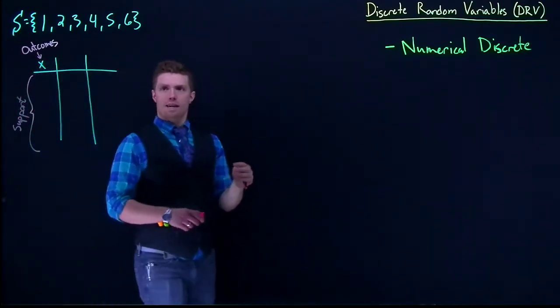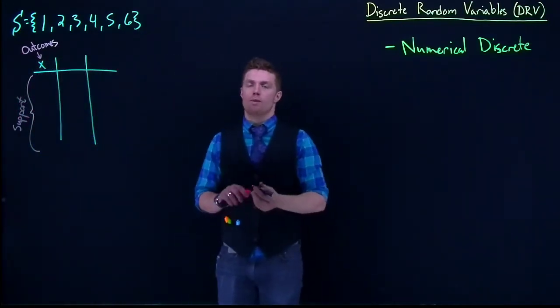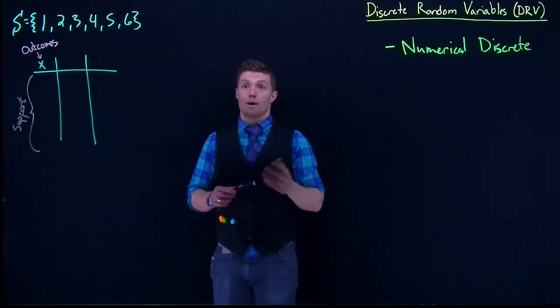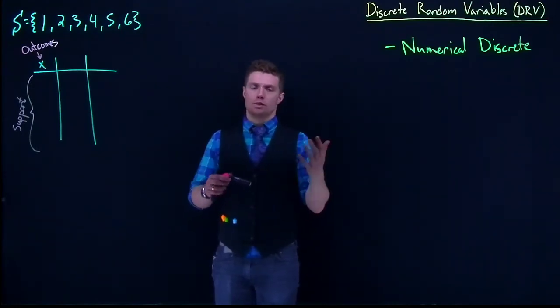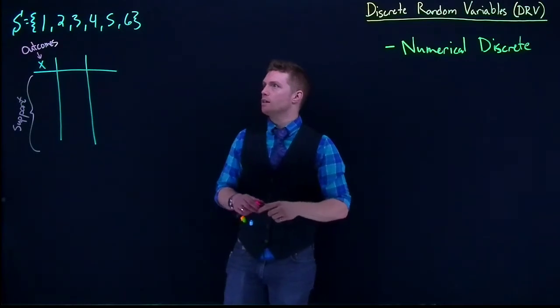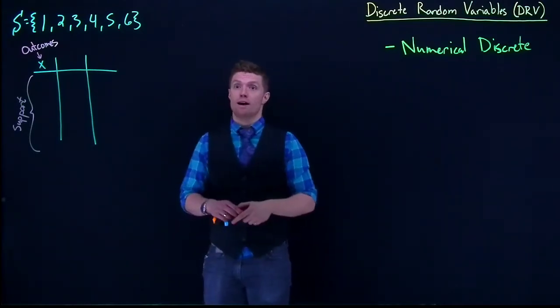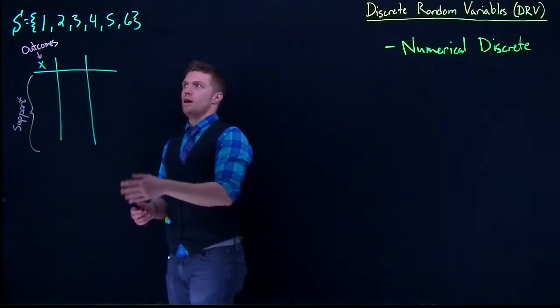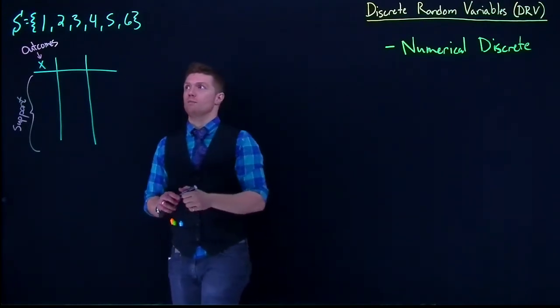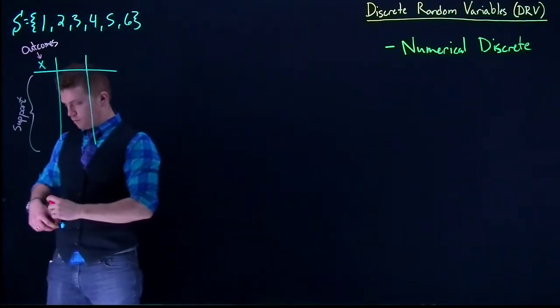The support has to have all possible outcomes of our random event. Remember, with a random event, we can't know what's going to happen beforehand. A dice is a good example of our random event.